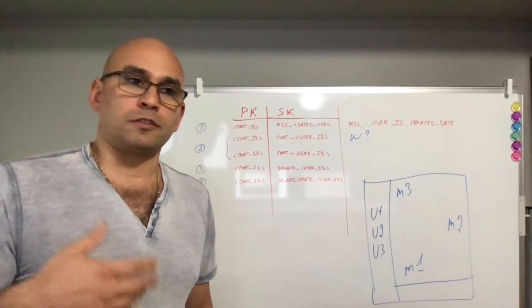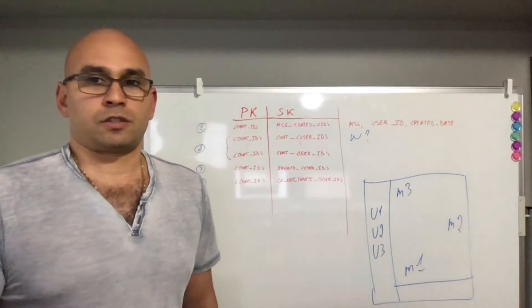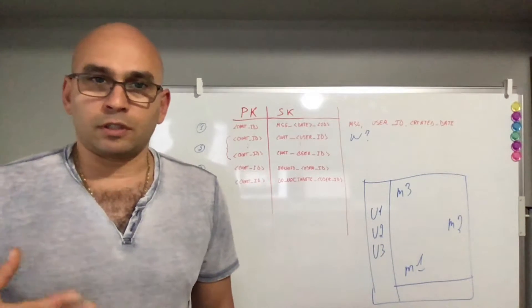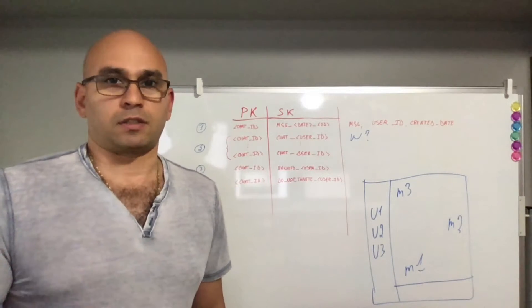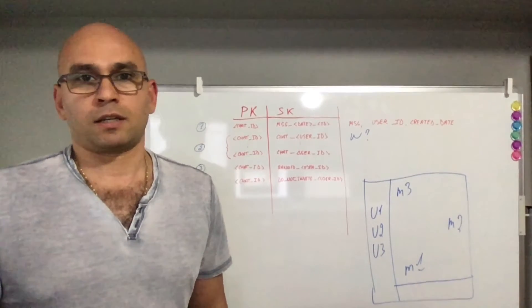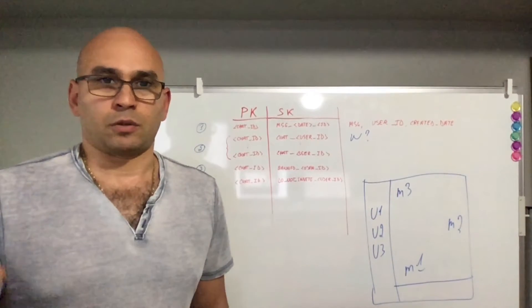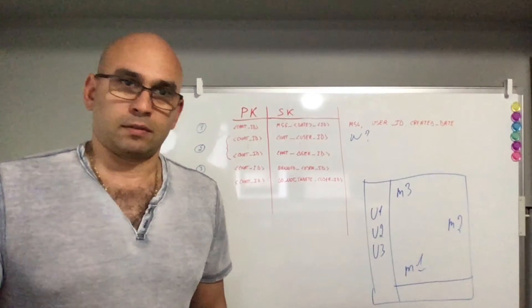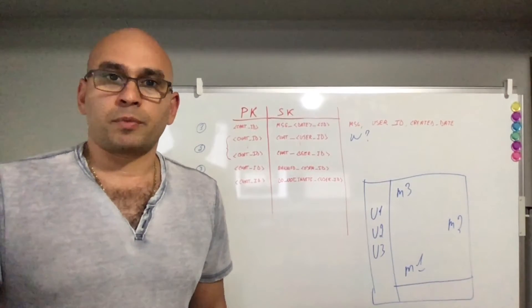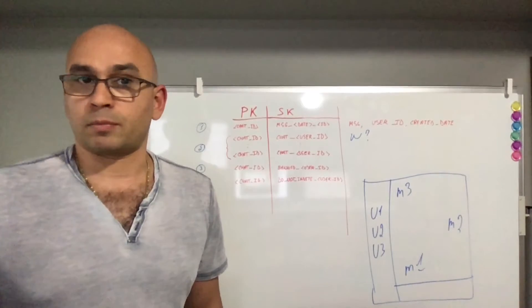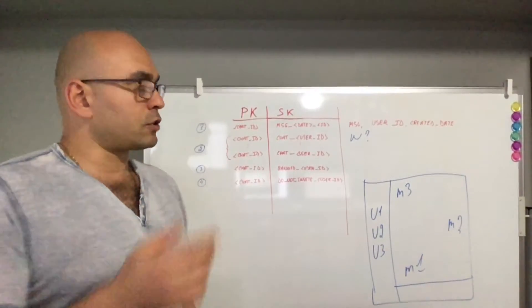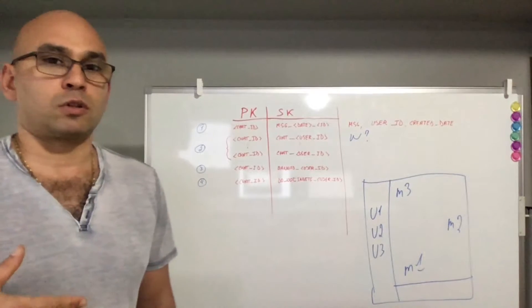The third one is you need to be notified whenever a new message comes in, and the fourth one is you need to be able to list all the participants in a particular conversation. And then there's the peripheral requirements like blocking people, blocking yourself from being invited to a conversation, and obviously posting messages.